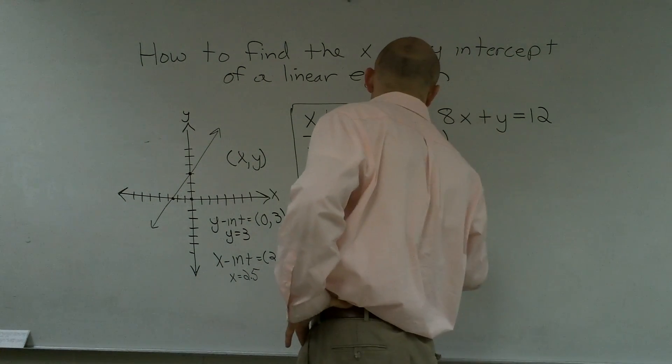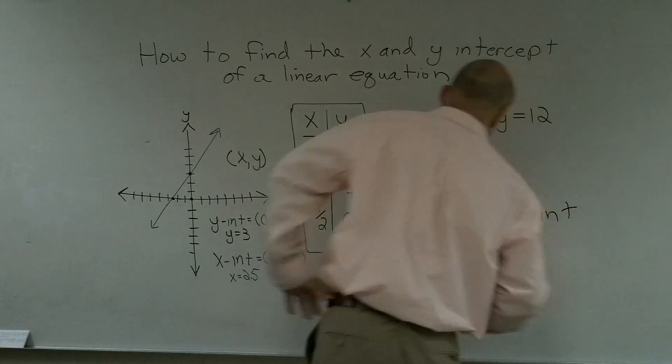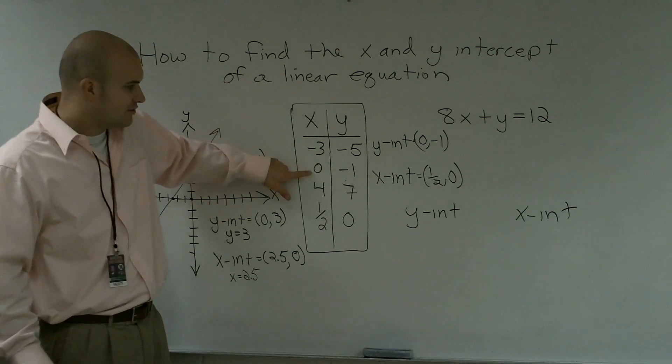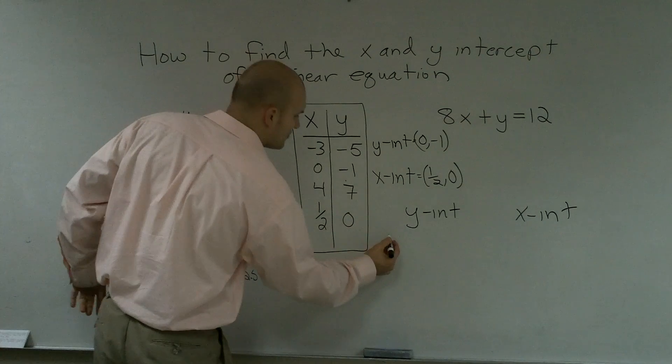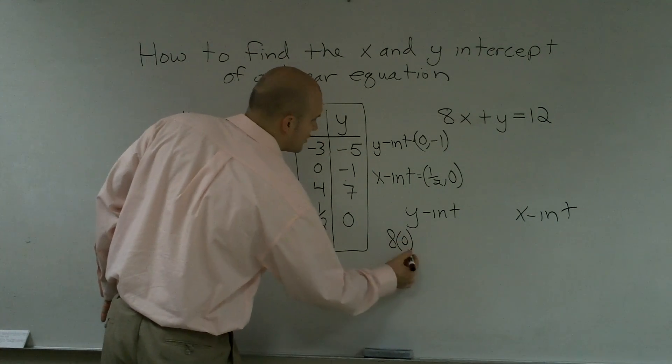So what I'll do is I'll write y-intercept and x-intercept. The y-intercept, my x-value is 0. So what I'm going to do is I'm going to plug in, like how we did evaluate at the beginning of the year, I'm going to plug a 0 in for x.